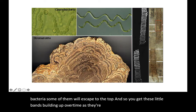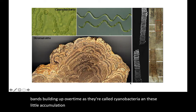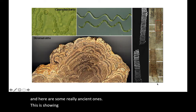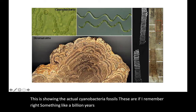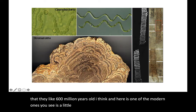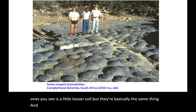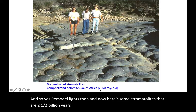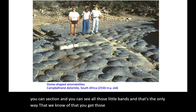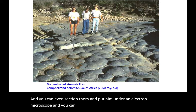You have a collection of these little bacteria living on the surface — they'll cover themselves with a little sunscreen, except they're bacteria and don't know when to stop. They'll cover themselves to the point where they die, but new bacteria escape to the top, so you get these little bands building up over time. They're called cyanobacteria, and the little nodules they build up are stromatolites. Here are some really ancient ones — the actual cyanobacteria fossils — something like 600 million years old. Here is one of the modern ones — a little looser coil, but basically the same thing.